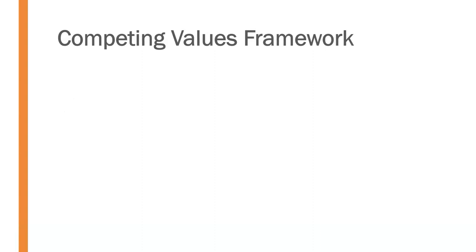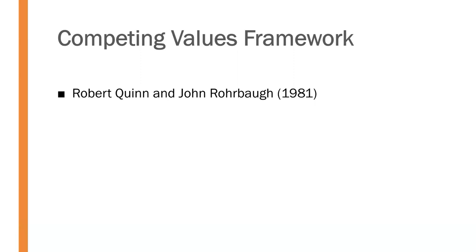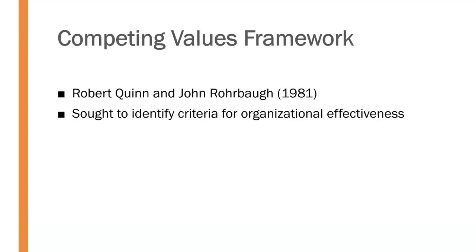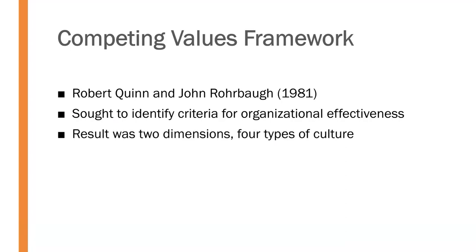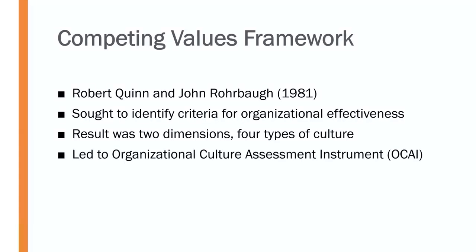A number of years ago, two researchers put together an idea called the Competing Values Framework, which identifies four distinct types of organizational culture. The Competing Values Framework was put together by Robert Quinn and John Rohrbaugh, researchers at the University of Michigan, who published this work in 1981. They sought to identify the criteria for organizational effectiveness — what makes some organizations effective and others not. Their result ended up with a two-dimensional, four-component type of culture identifying dimensions of internal versus external focus, and stability versus flexibility, leading to what we call the Organizational Culture Assessment Instrument, or OCAI.